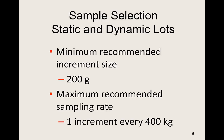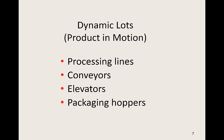When we select our sample, there are two situations: static and dynamic lots. The minimum recommended increment size is generally about 200 grams, and the maximum recommended sampling rate is one increment every 400 kilograms. For dynamic lots, where a product is in motion, collecting incremental samples is much easier and straightforward — for instance, in processing lines, conveyors, elevators, and packaging hoppers, it's a simple matter to take a sampling cup or an automatic sampler and get incremental samples at the proper intervals.